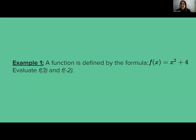Example 1: we have a function defined by the formula f of x is equal to x squared plus 4. We want to evaluate f of 3 and f of negative 2. We have f of x as the equation, but we want to evaluate these at specific numbers. The idea here is that 3 and negative 2 are going to replace x in our formula.